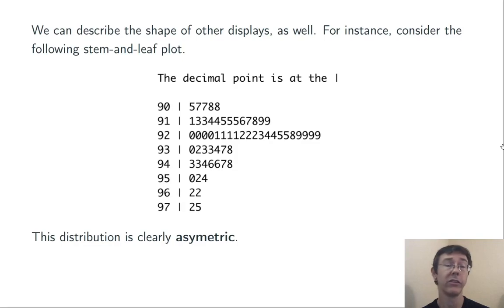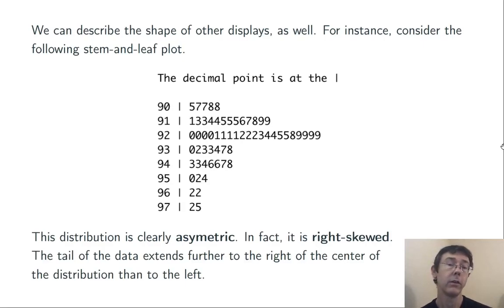We can do better though than just saying it's asymmetric. We can talk about the direction of the asymmetry. In this case, there's a longer tail towards the higher numbers away from that center than there is toward the smaller numbers.